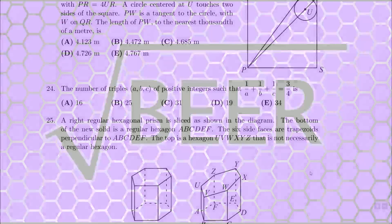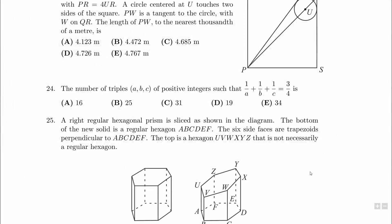Hello, ladies and gentlemen, and welcome back. We're looking at question 24 on the 2008 Fair Map paper. The number of triples ABC of positive integers such that 1 over A plus 1 over B plus 1 over C is 3 quarters.